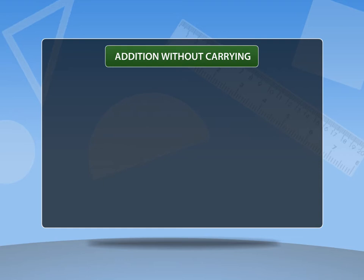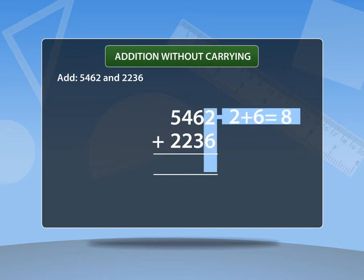Addition without carrying. Let's add 5462 and 2236. Starting from the ones place, 2 plus 6 is equal to 8.